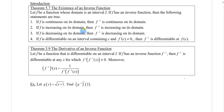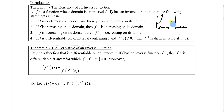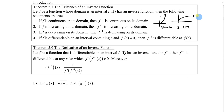If f is increasing on its domain, then f inverse is increasing on its domain. Let me draw a picture of what that looks like. If the function is monotonic — when x goes to infinity, y goes to infinity — the inverse function looks like this. The new domain for f inverse: if f is increasing, then the range for the inverse is also increasing. Statement three is similar but decreasing: if f is decreasing on its domain, then f inverse is decreasing on its domain.